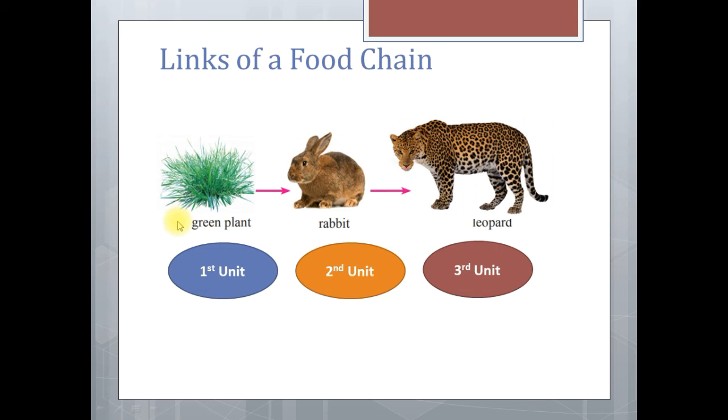Similarly, here the green plant is the producer which produces food by photosynthesis. Rabbit is a consumer of the green plant, and the leopard is also a consumer.